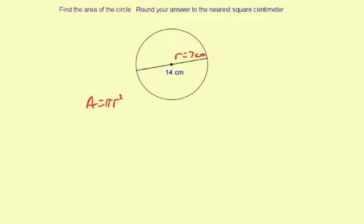So let's substitute the 7 centimeters in the area formula and find the area of the circle. Area equals pi times 7 centimeters squared.